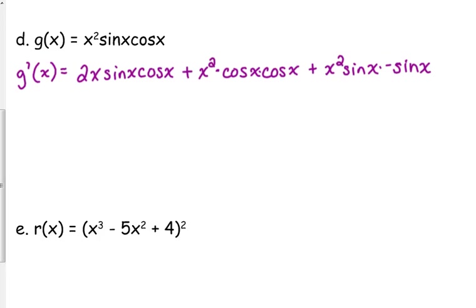We had started this problem yesterday, taking the derivative of x squared times sine of x times cosine of x. So we had three different terms being multiplied together, and we were taking the derivative.